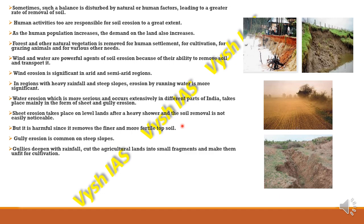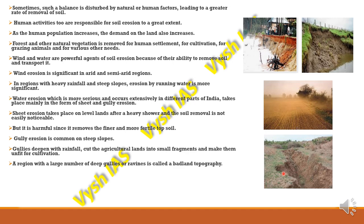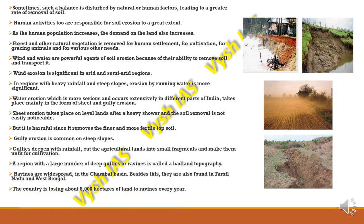Gullies deepen with rainfall, cutting agricultural land into small fragments and making them unfit for cultivation. A region with a large number of deep gullies or ravines is called badland topography. The Chambal ravines are widespread and mainly found in the Chambal basin, and also in Tamil Nadu and West Bengal. The country is losing about 8,000 hectares of land to ravines every year.